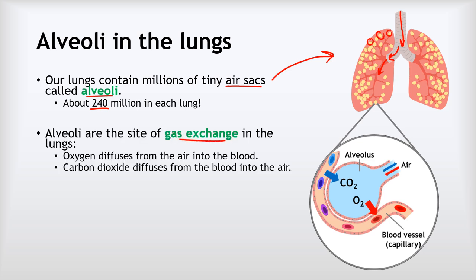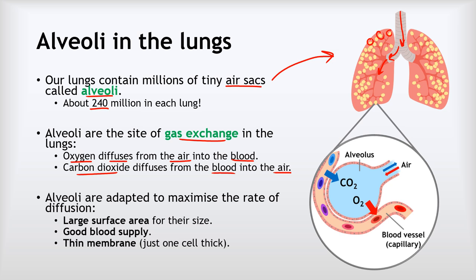The alveoli are the site of gas exchange in the lungs. Oxygen diffuses from the air into the blood, and carbon dioxide diffuses from the blood into the air. The alveoli are adapted to maximise diffusion in three ways: they have a large surface area — any individual one is small but millions together give the lungs a massive surface area, approximately the size of a tennis court. They have a very good blood supply, with every alveolus wrapped in capillaries to carry carbon dioxide to it and oxygen away. And they have very thin membranes so the gases do not have far to diffuse and can get in and out very quickly.